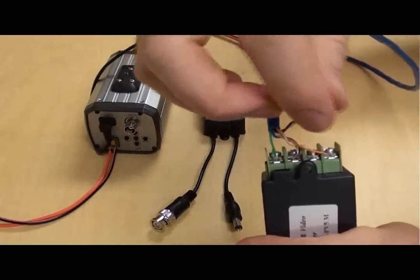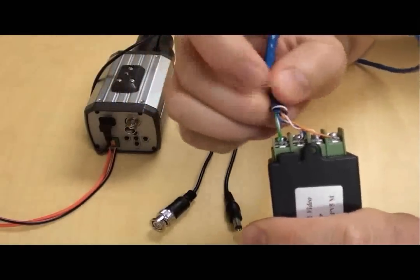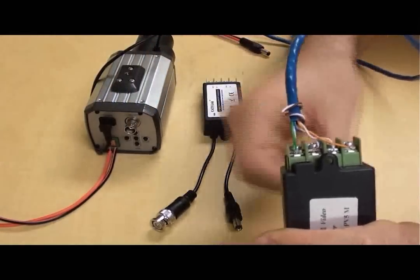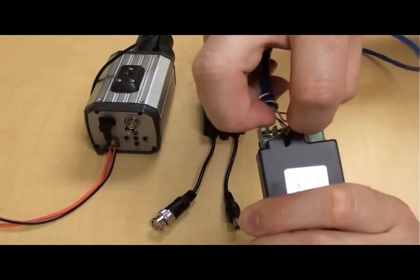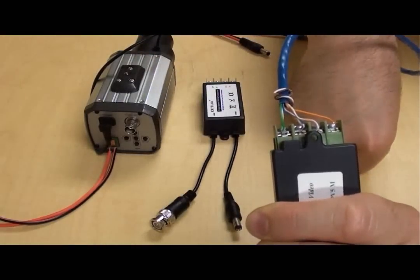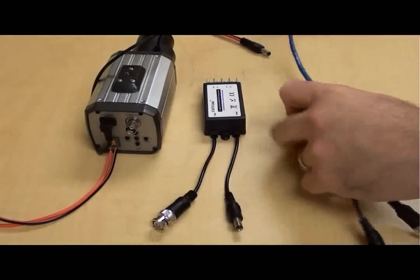Again, please notice that the orange pair is used for the video positive and negative terminal. For the power, a pair is used for the positive and a pair for the negative connection. This allows for extra conduction to run the power.